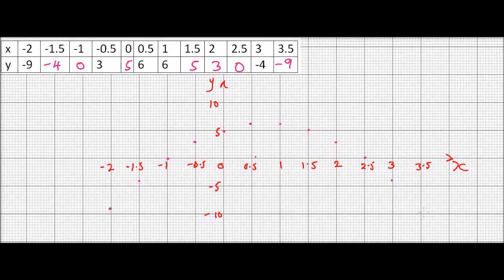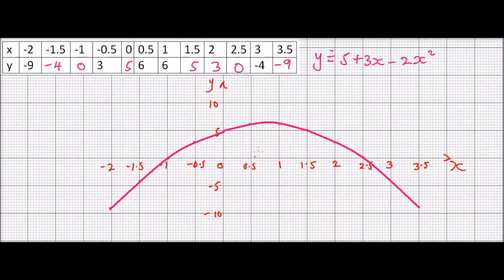When x is 3.5, y is minus 9. We join all these points to produce the quadratic graph of y equals 5 plus 3x minus 2x squared. Using a freehand curve, you should get a smooth parabola. Always remember to label your graph: y equals 5 plus 3x minus 2x squared.